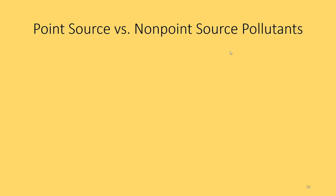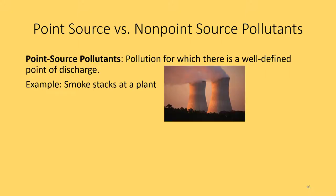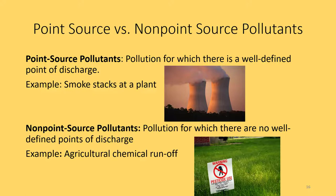The next set of definitions: point source versus non-point source pollutants. A point source pollutant is pollution for which there is a well-defined point of discharge — for example, smokestacks at a plant where you can identify exactly where the pollution is coming from. A non-point source pollutant is pollution for which there is no well-defined point of discharge. For example, if many farmers spray chemical pesticides and fertilizers and rain carries that runoff into a local river, you don't know exactly how much came from each farmer.